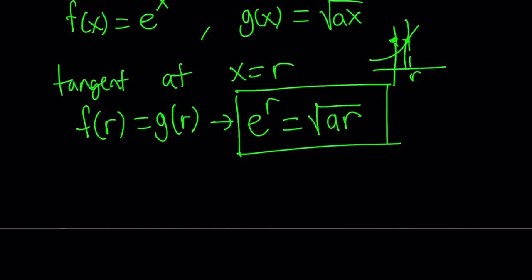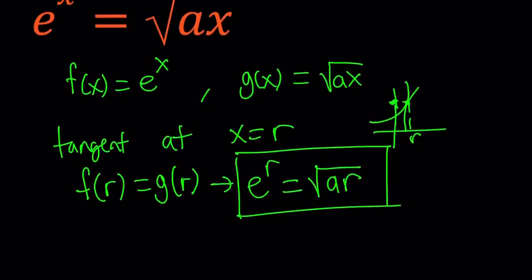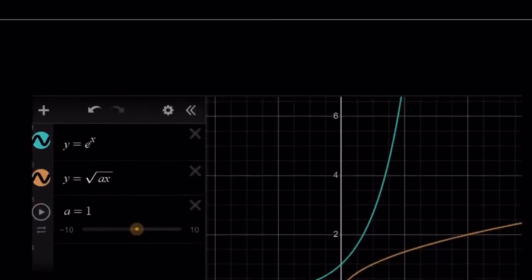Now, if the two curves are tangent, not only are they going to have the same value, but they will also have a common tangent — meaning the same slope at that point. I want to show you the special case scenario first.